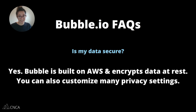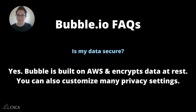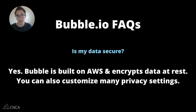Is my data secure? Yes, it is. Bubble is built on AWS — Amazon Web Services — and it encrypts your data at rest, which means that if you're not authorized to access the data, you will not be able to get to it. Amazon's Web Services power a lot of the biggest websites in the world. Bubble's security detail page on their website goes into this in much more depth, and I encourage you to check that if you have specific security requirements for your application.